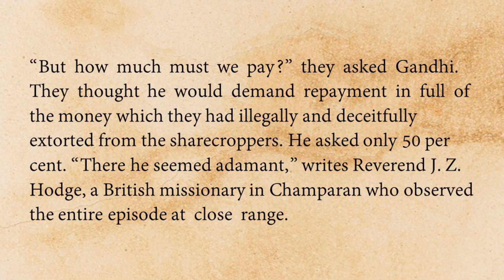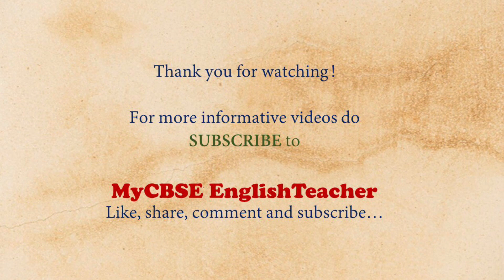There he seemed adamant, writes Reverend J.Z. Hodge, a British missionary — a person who comes to do service to the people. This man, Reverend Hodge, observed the whole Champaran episode from close range and says that Gandhiji was stubborn and strict. Gandhi insisted that the British landlords should pay 50% of the money they had taken from the farmers back to the sharecroppers.